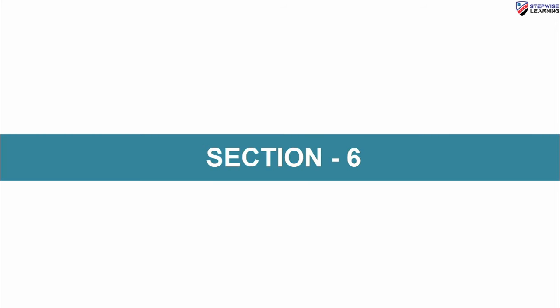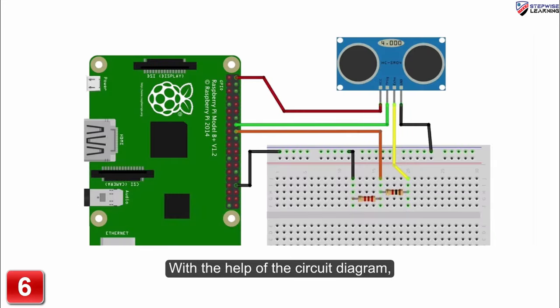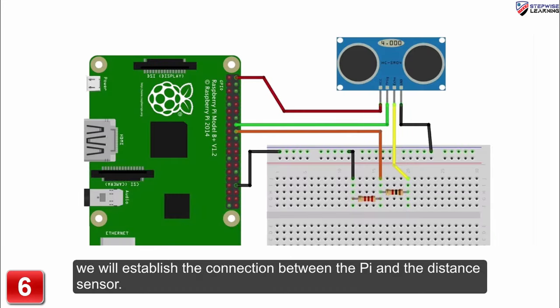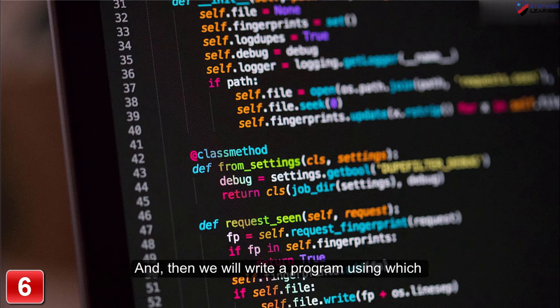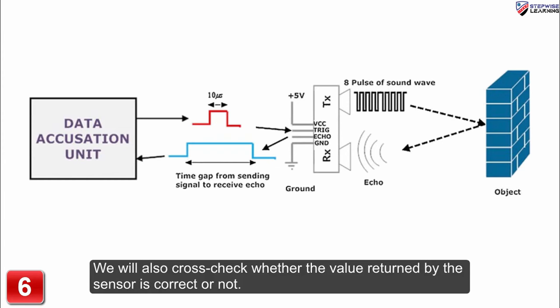In the sixth section, we will get to know the working principle of the distance measurement module. With the help of the circuit diagram, we will establish the connection between the Pi and the distance sensor. And then we will write a program using which we can measure the distance between the object and the sensor module. We will also cross-check whether the value returned by the sensor is correct or not.